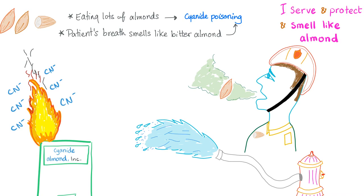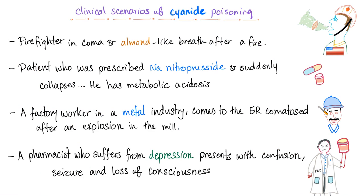Classic exam scenarios for cyanide poisoning: a firefighter in a coma with almond-like breath after a fire; a patient prescribed sodium nitroprusside who suddenly collapses with metabolic acidosis due to lactic acidosis; a factory worker in the metal industry who arrives comatose after an explosion; or a pharmacist with major depressive disorder presenting with confusion, seizure, and loss of consciousness after ingesting cyanide.